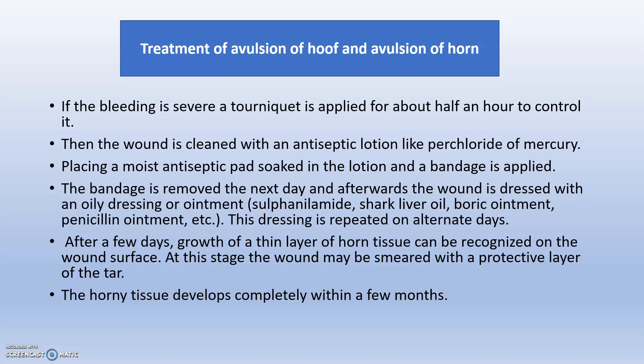The treatment of avulsion of hoof and avulsion of horn: if bleeding is severe, a tourniquet is used, and the wound is cleaned with antiseptic lotion such as perchloride of mercury. A moist antiseptic pad soaked in the lotion is placed and a bandage is applied over the avulsed area. The bandage is removed the next day and the wound is dressed with dry dressing ointments, repeated daily. After a few days, growth of a thin layer of horn tissue can be recognized, and complete horn regrowth occurs within about a month.